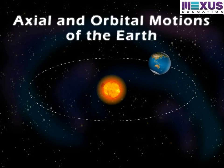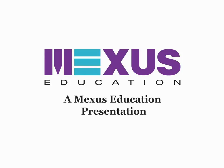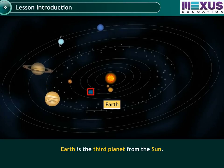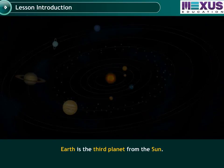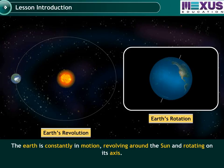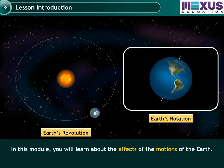Axial and orbital motions of the Earth. Earth is the third planet from the Sun. The Earth is constantly in motion, revolving around the Sun and rotating on its axis. In this module you will learn about the effects of the motions of the Earth.